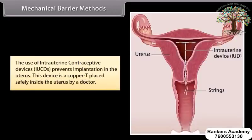The use of intrauterine contraceptive devices (IUCDs) prevents implantation in the uterus. This device is a copper T placed safely inside the uterus by a doctor.